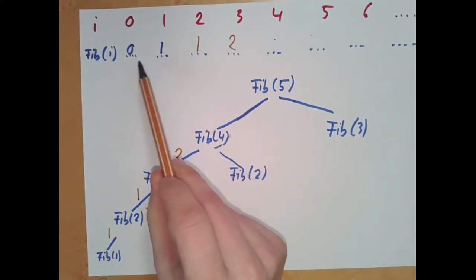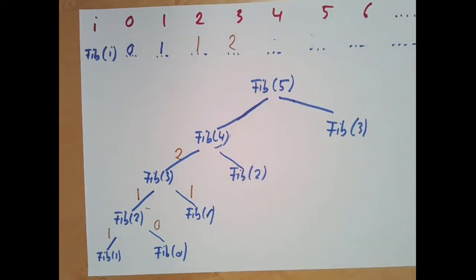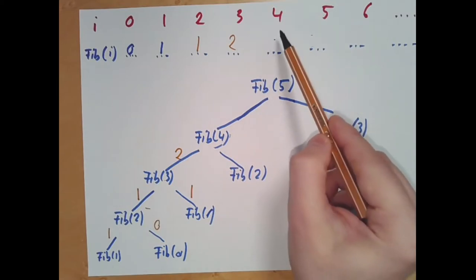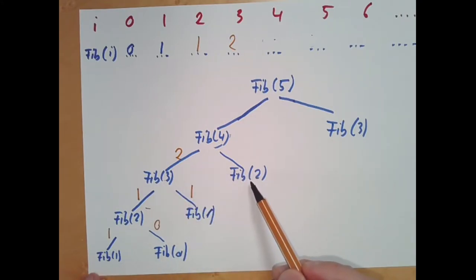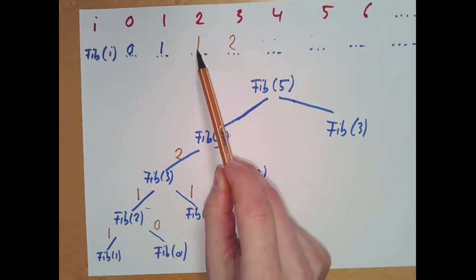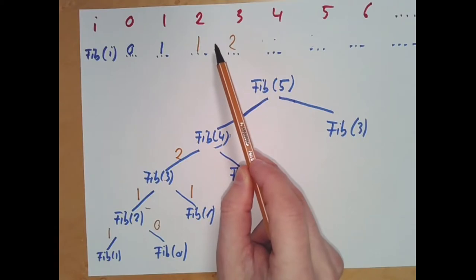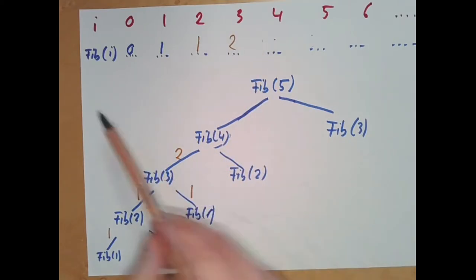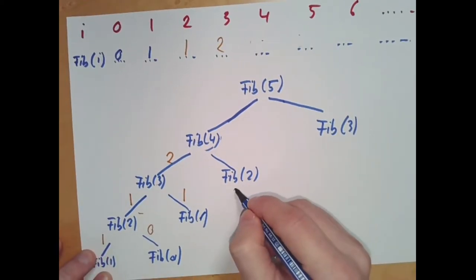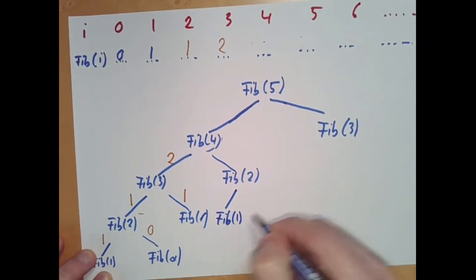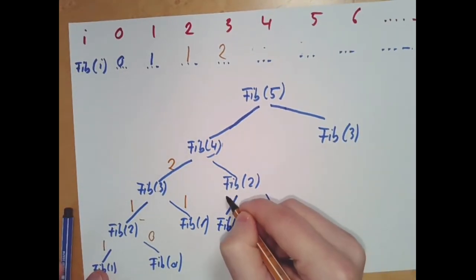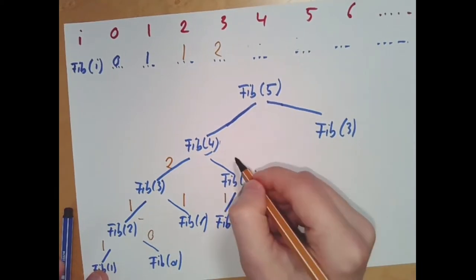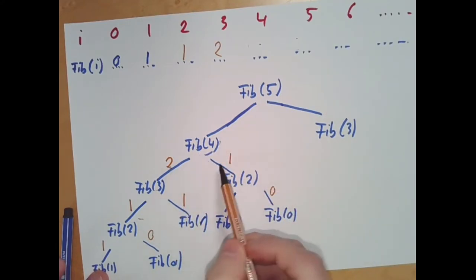Going back up, for Fibonacci of 4 we need Fibonacci of 3 plus Fibonacci of 2. We know Fibonacci of 3 is 2, but Fibonacci of 2 on this branch needs to be recalculated from scratch — breaking it into Fibonacci of 1 plus Fibonacci of 0 again. We get 1 and 0, so Fibonacci of 2 is 1. Therefore Fibonacci of 4 is 2 plus 1, which gives 3.